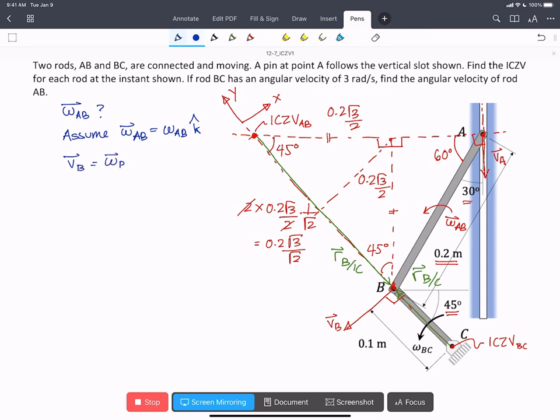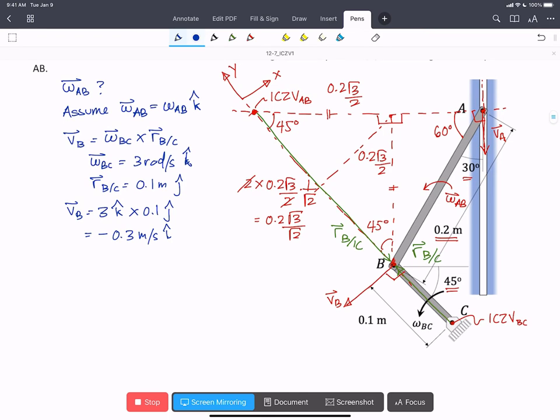VB equals omega BC cross RB with respect to C. Omega BC we've been told in the problem is 3 rads per second in the positive K hat. And RB with respect to C is going to be 0.1 meters in the positive J hat. So VB becomes 3 in the K hat cross with 0.1 J hat. That's going to be minus 0.3 meters per second in the I hat. So K cross J is minus I. So we've got one expression for VB.